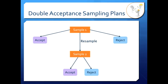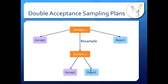Let's review what double acceptance sampling plans are. In a single acceptance sampling plan, you take your sample and then you make an accept or reject decision based on that sample. In a double acceptance sampling plan, your first sample can give you three outcomes: the same accept or reject decision, and also a decision to resample. If you do that, you take your second sample and then you accept or reject. There's no more sampling after that because it's a double acceptance sampling plan, so you have up to two samples.